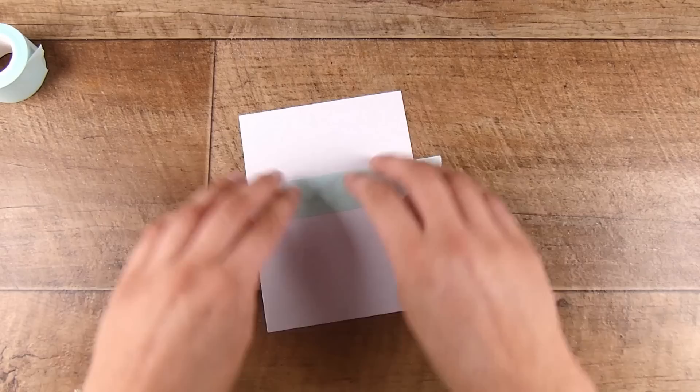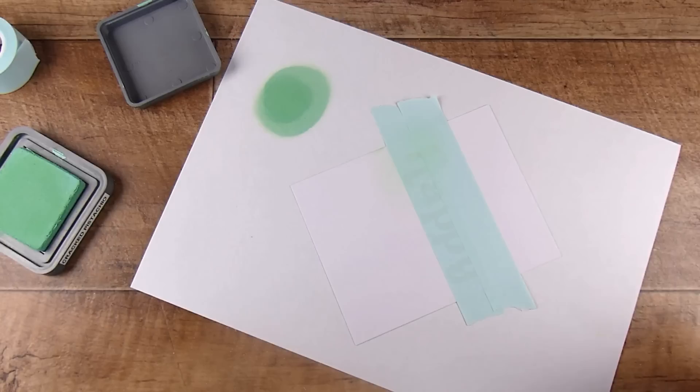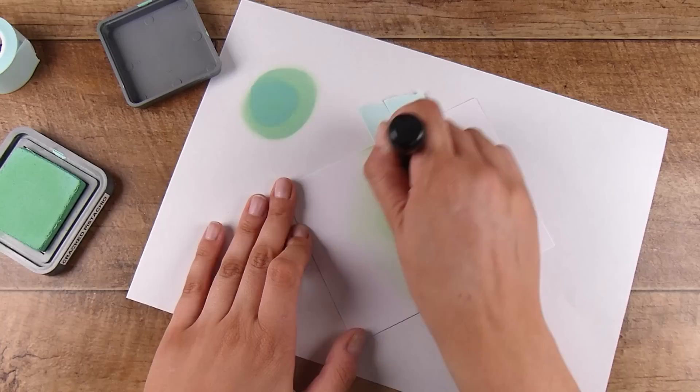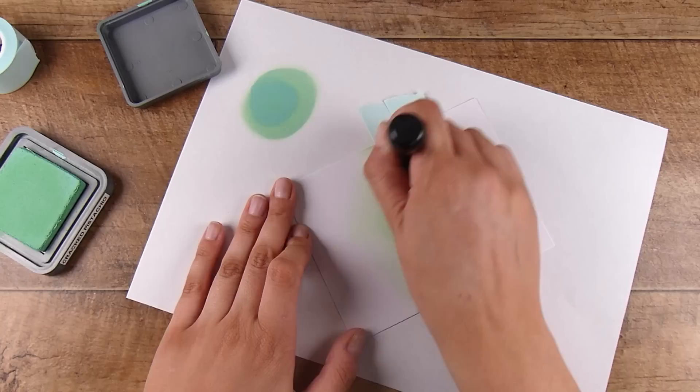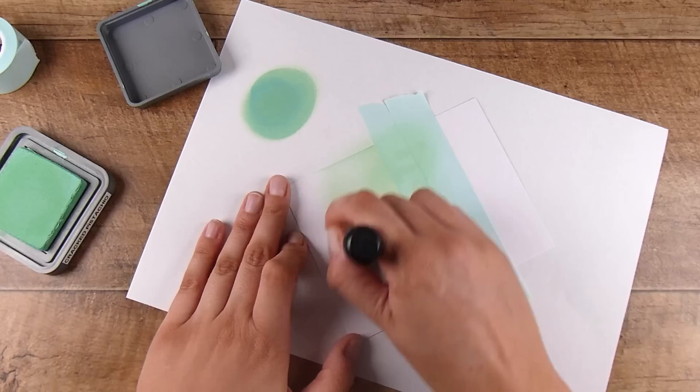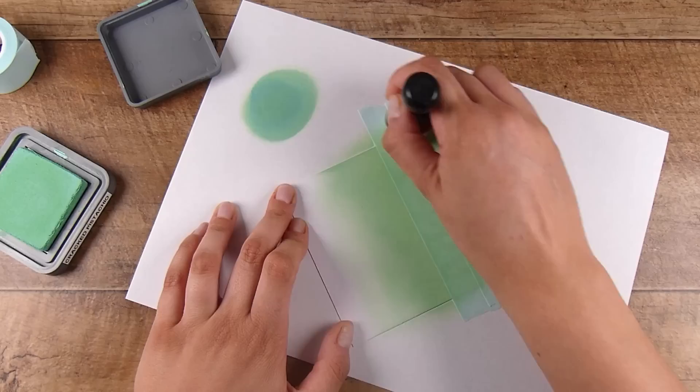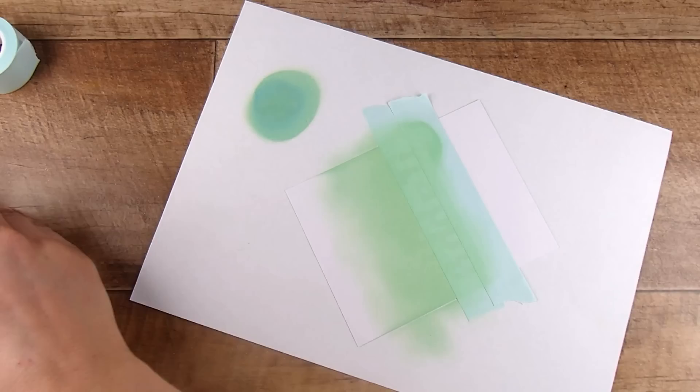I'm using Cracked Pistachio and recently re-inked all my Distress Oxide inks. Now I have to be aware when inking—if I want light coverage, I need to blot off first. With a juicy ink pad, you have to be aware of how much ink is loaded on there if you're doing a nice ombre effect.